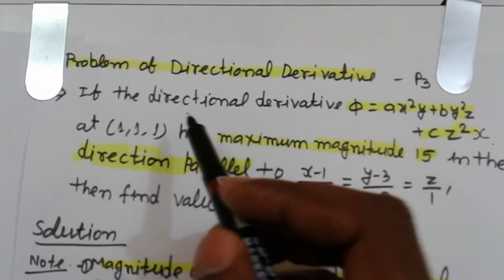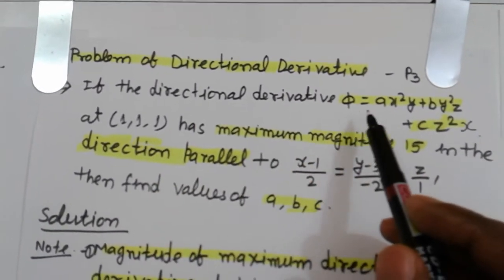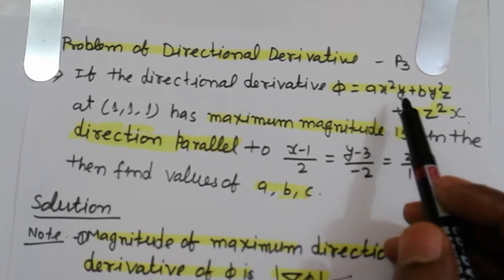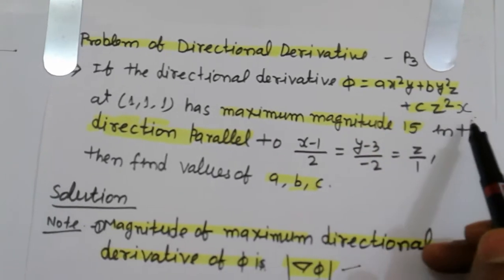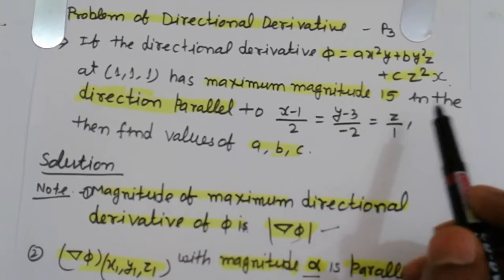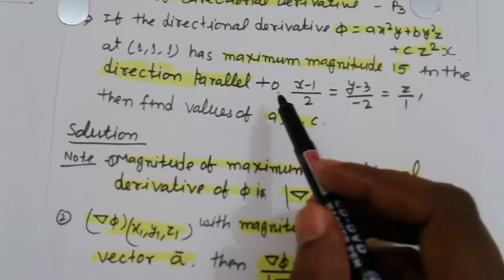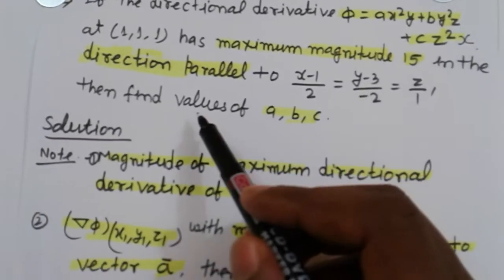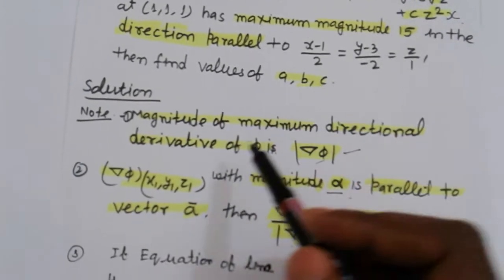Problem on directional derivative. If the directional derivative phi equal to x square y plus b square z plus c z square x at point (1,1,1) has maximum magnitude 15 in the direction parallel to the line, then find the value of a, b, c.